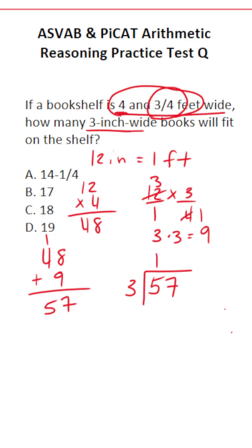Three goes into five one time without going over. Three times one is three. Five minus three is two. Drop down this seven. Three times nine is exactly 27 with no remainder. Therefore, we know that we can fit 19 books on this bookshelf.